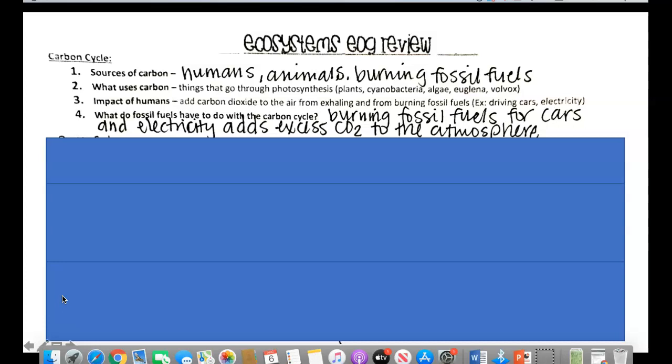It naturally occurs, but the burning of fossil fuels is what adds way, way too much carbon dioxide. Number four, what do fossil fuels have to do with the carbon cycle? So burning fossil fuels for cars, electricity, that's going to add that excess of carbon dioxide to the atmosphere.